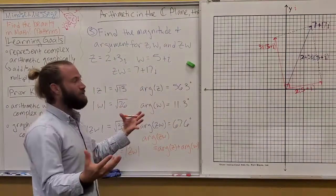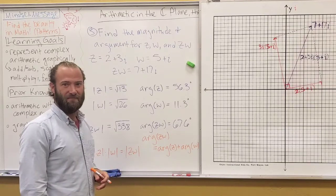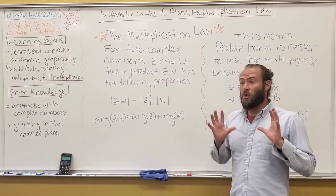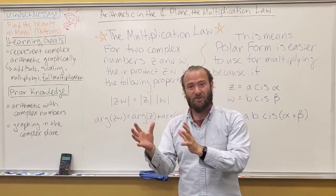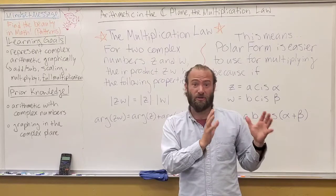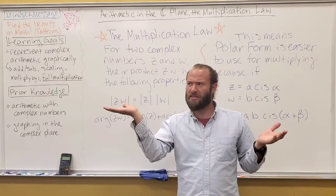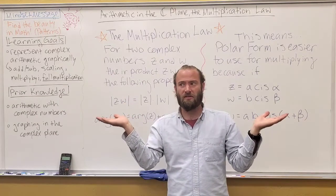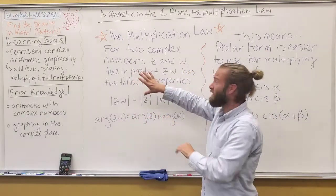So we've just seen that complex multiplication relies on the concepts of magnitude and argument, or direction and angle. And which of the two forms of a complex number, rectangular or polar, relies on those same two things? Oh, polar. So here's the recap of what we just stated.